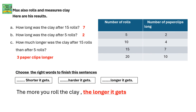Max also rolls and measures clay. Here are his results. How long was the clay after 15 rolls? 7. How long was the clay after 5 rolls? 2. How much longer was the clay after 15 rolls than after 5 rolls? 3 paper clips long. We have written these answers by checking the table we have made.